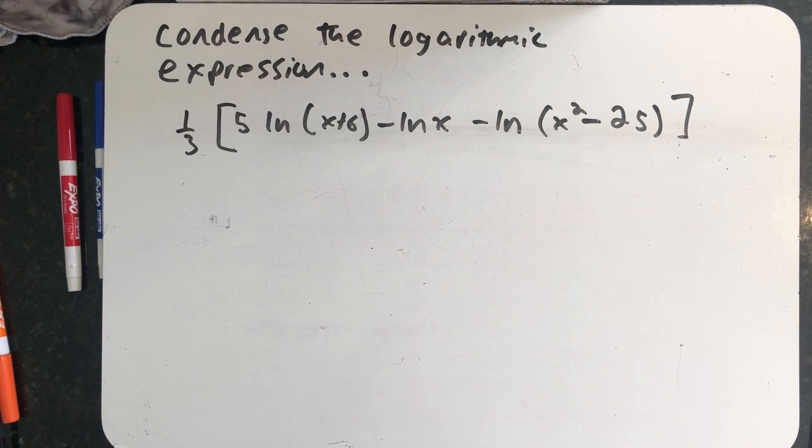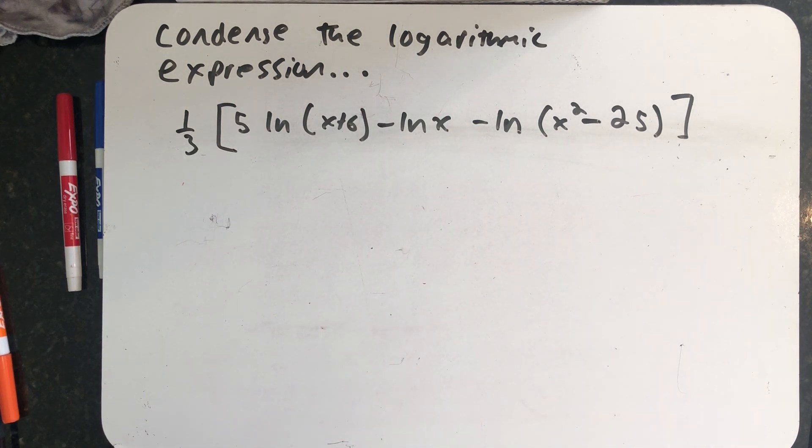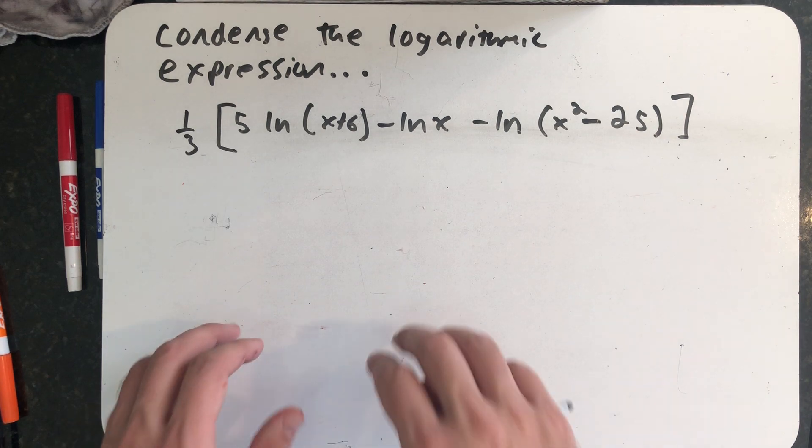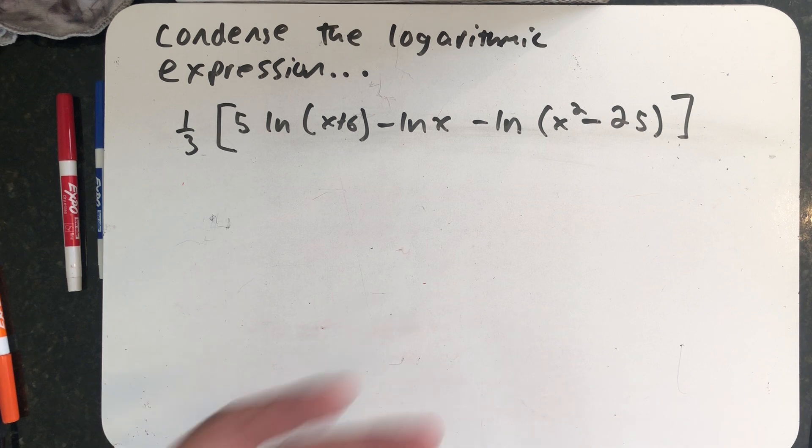Here we're asked to condense this logarithmic expression. And I put a dot, dot, dot there because the rest of the instructions should read that I want this as a single logarithm that has expressed all of the powers out front as exponents. So I have a logarithm whose coefficient is one.